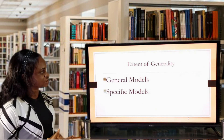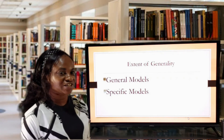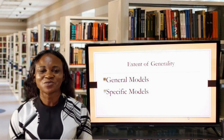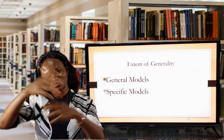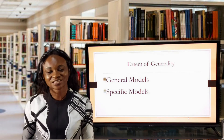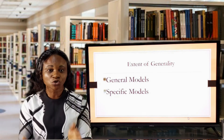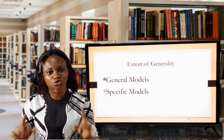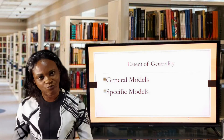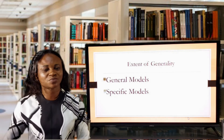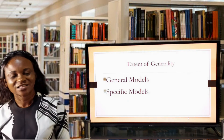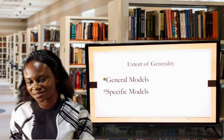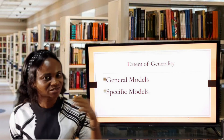We have the extent of generality. Based on the extent of generality, there are two types: general models and specific models. General models can be applied to more than one situation — they can be applied to several situations. But a specific model is more like a static model that can be applied to just a given situation — it is a one-off model that cannot be applied generally. For instance, the model that will be applied during the COVID era may not work when the pandemic is over. That's a specific model.